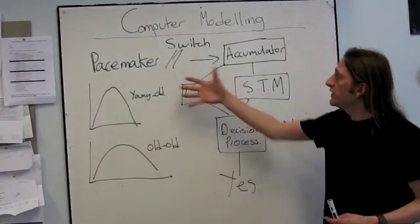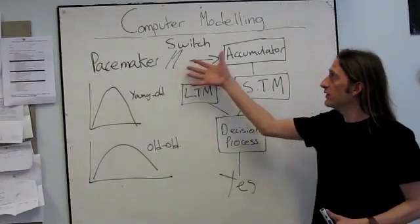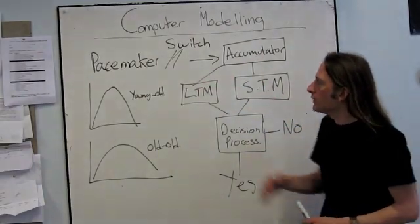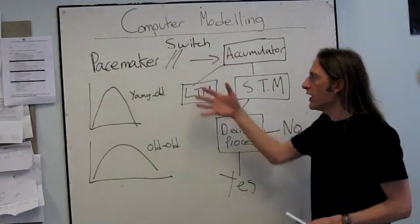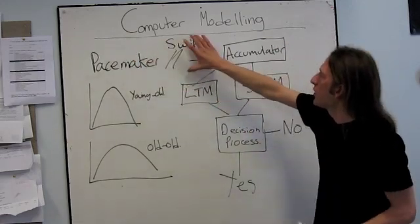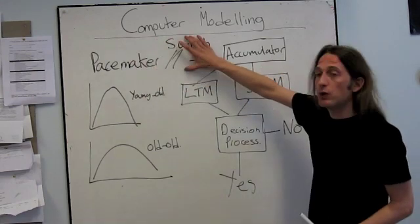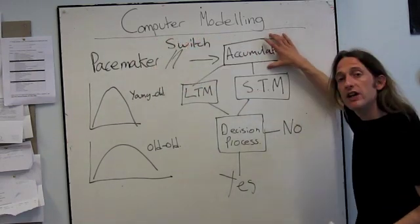So here is our SET system, our Scalar Expectancy Theory system, our Scalar Timing model. This should be familiar to you by now. At the top we have the pacemaker producing pulses, a switch which gates them, and an accumulator which stores them.